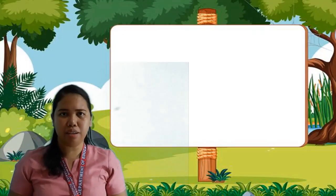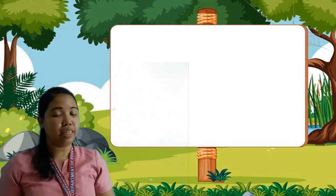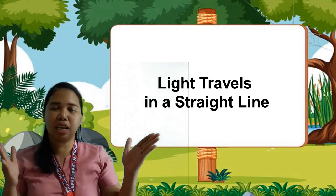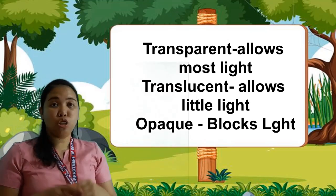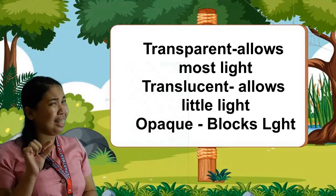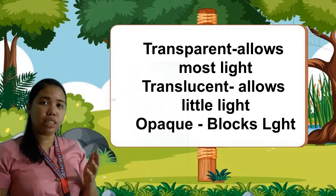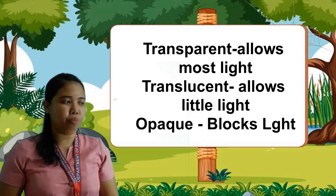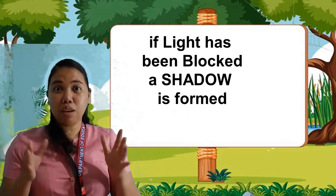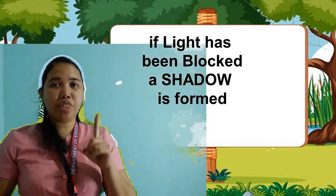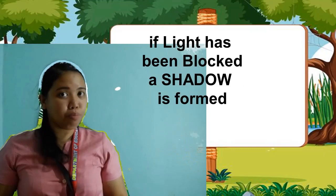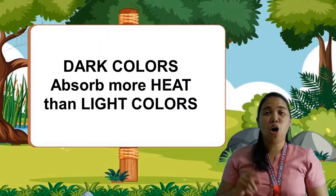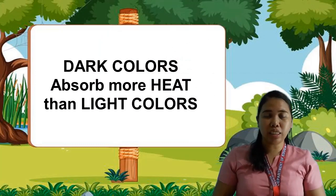Job well done! Always remember that light always travels in a straight line. Transparent objects allow most light to pass through. Translucent objects allow little light to pass through, while opaque objects allow no light at all to pass through. If light has been blocked, a shadow forms — it is when light passes through an opaque object that blocks light. Lastly, dark colors may absorb more heat than light colors.